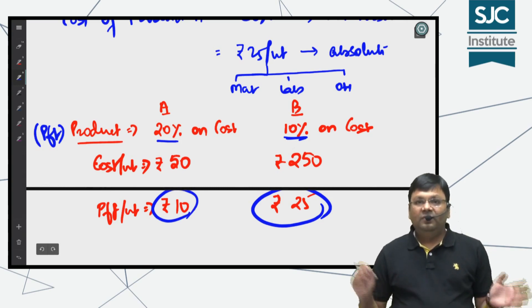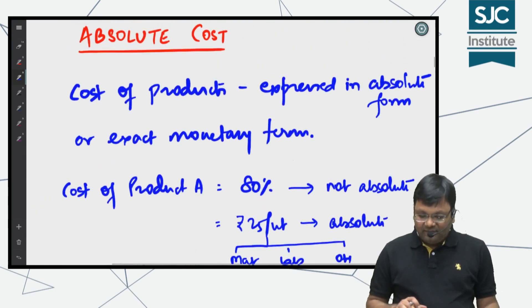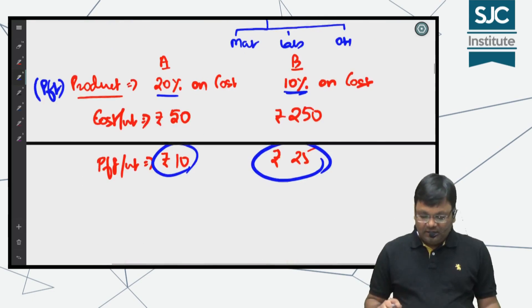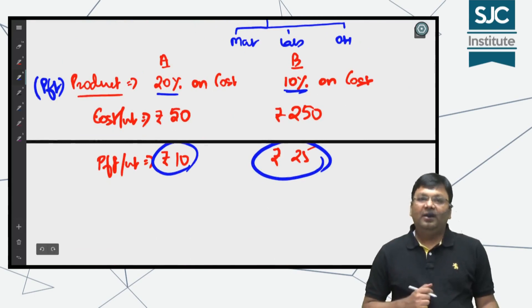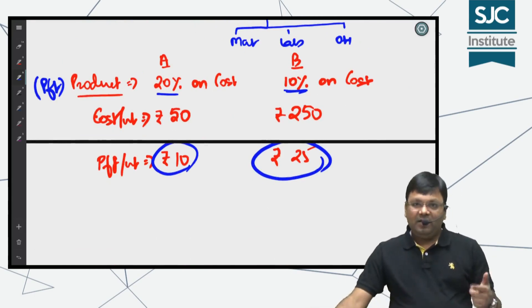We always want more absolute income. Absolute cost favors your future decision making and pricing—you must know your cost in absolute form so you understand how much absolute earnings you're making. An advantage of absolute cost is that it favors future decision making and pricing of your products.